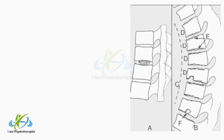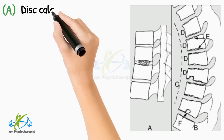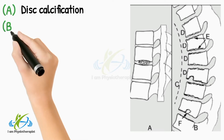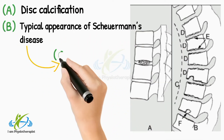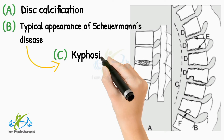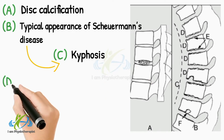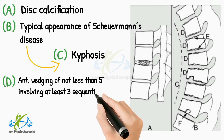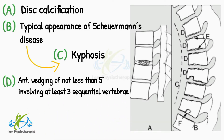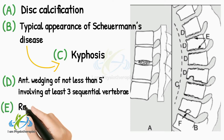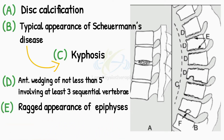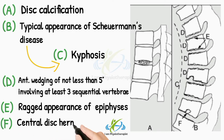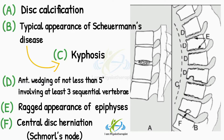In this radiograph, point A shows disc calcification. Point B shows the typical appearance of Scheuermann's disease, with kyphosis as shown in point C. Point D shows anterior wedging of not less than 5 degrees involving at least 3 sequential vertebrae. Point A shows ragged appearance of the epiphyses. Point F shows a central disc herniation — Schmorl's node — but this is not always associated with Scheuermann's disease.